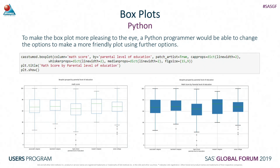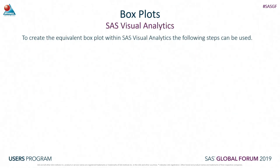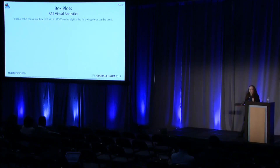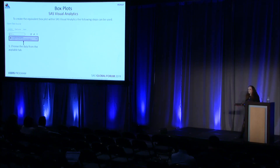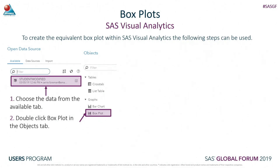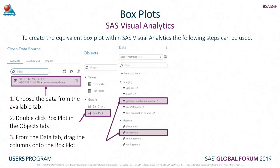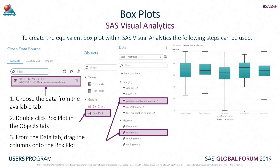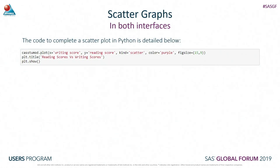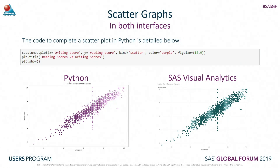Alternatively, as a Python user, I could just switch across to SAS Visual Analytics and create the exact same boxplot with just three clicks: choose the data from the available tab, double click on the boxplot from the objects tab, and drag and drop the data onto the visualization. I can also create scatter graphs - the code just needs an x-axis, y-axis, and chart type. Plotting the writing score and reading score, you can see the results in both Python and SAS Visual Analytics are exactly the same results, just slightly different displays.